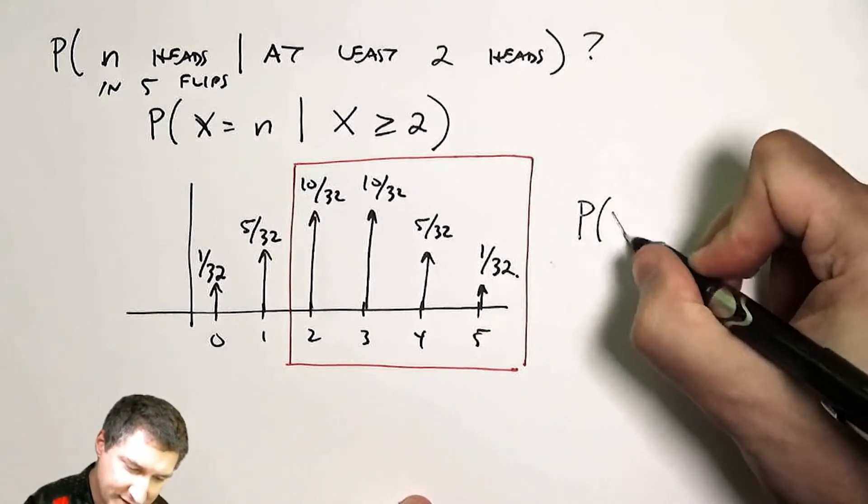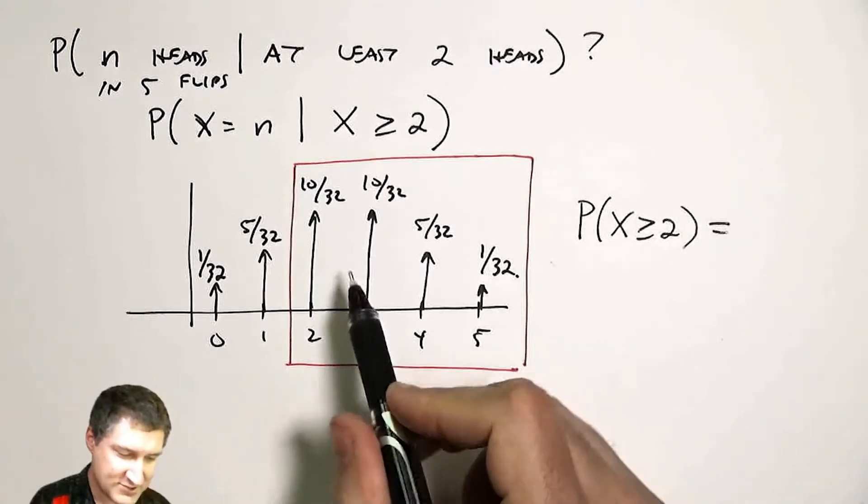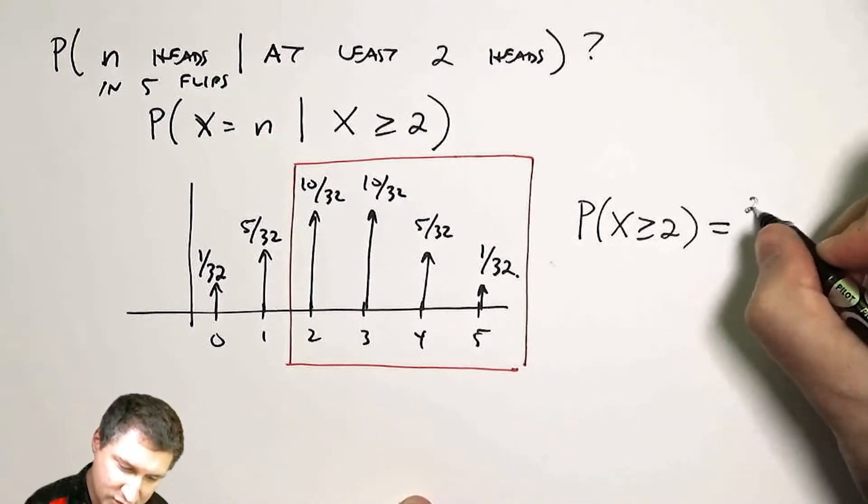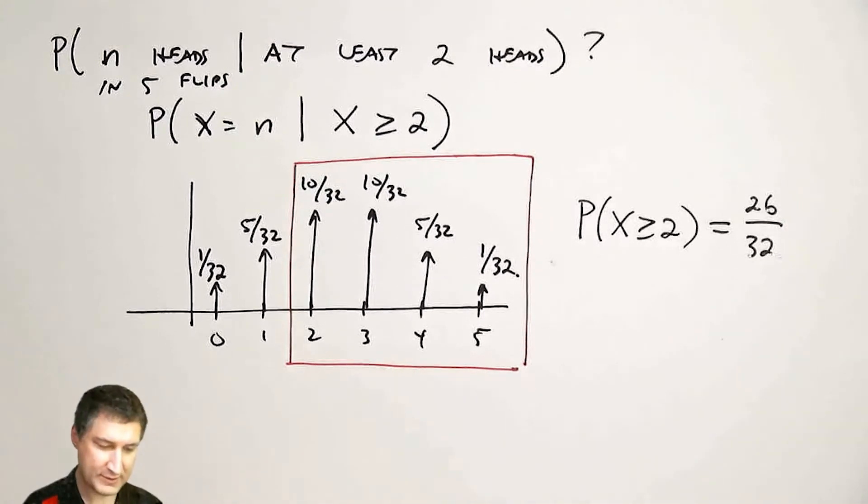So I'd say the probability that x is greater than or equal to two is, I can just read them off. It's 10 plus 10 plus 5 plus 1 is 26 over 32.